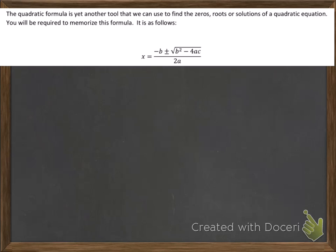And that method is called the quadratic formula. So we can use this to find the zeros, roots, or solutions of quadratic equations. And you need to memorize this formula. So the formula is x equals negative b plus or minus the square root of b squared minus 4ac all over 2a.